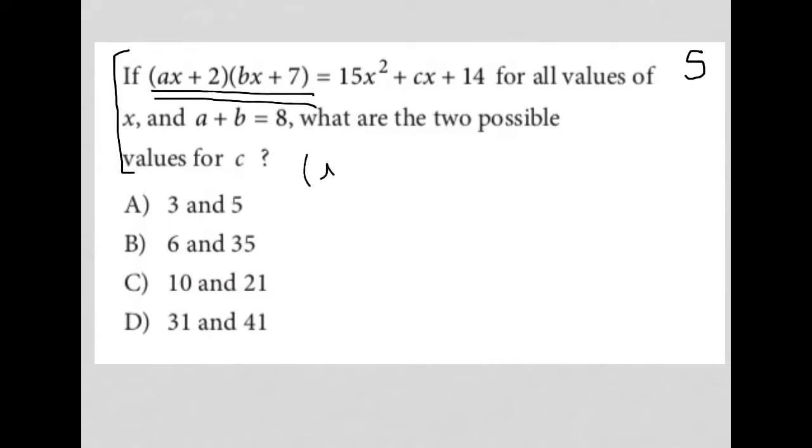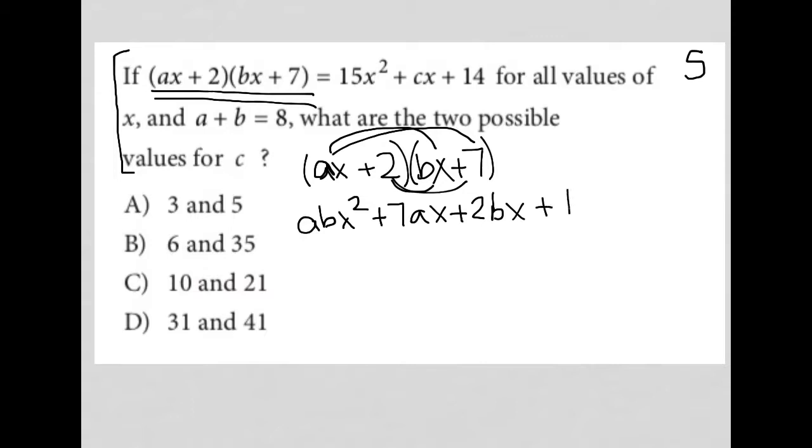So if I'm going to write down again what I have, I have ax plus 2 and bx plus 7, and I'm going to simplify that by foiling. So foiling, I'm going to multiply ax times bx, which gives me abx squared. And then ax times 7, which gives me plus 7ax, and then 2 times bx, which gives me positive 2bx, and then 2 times 7, which gives me 14.